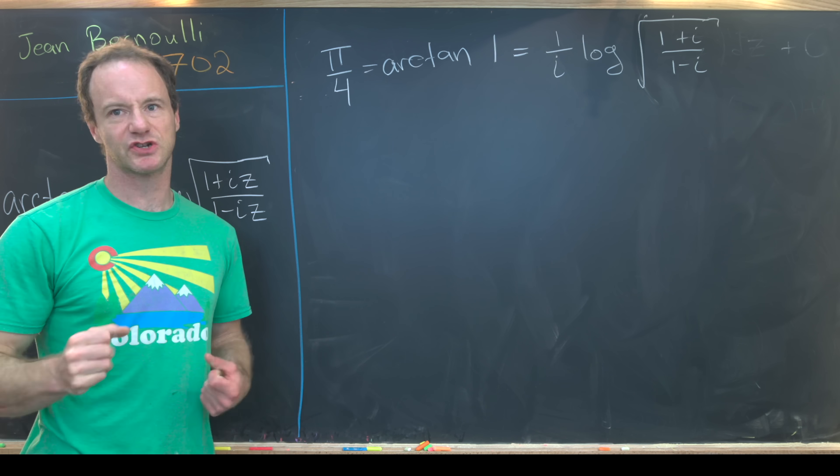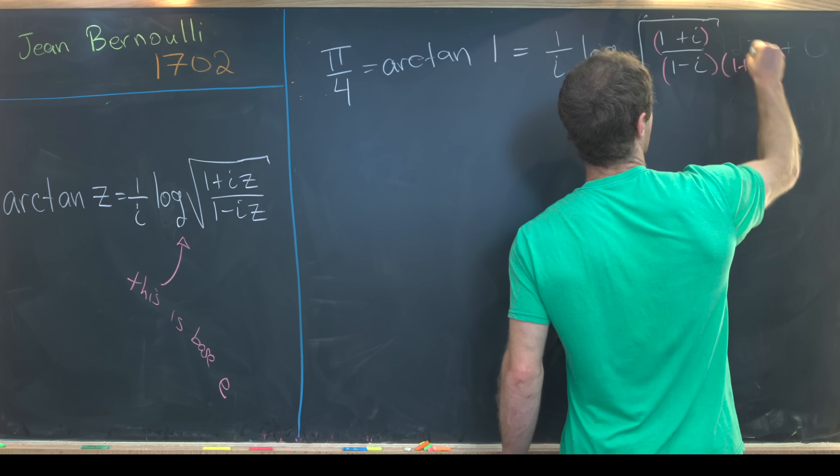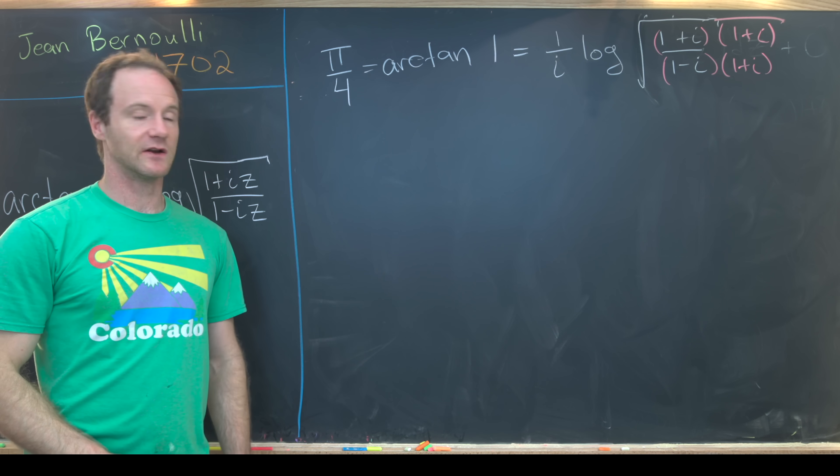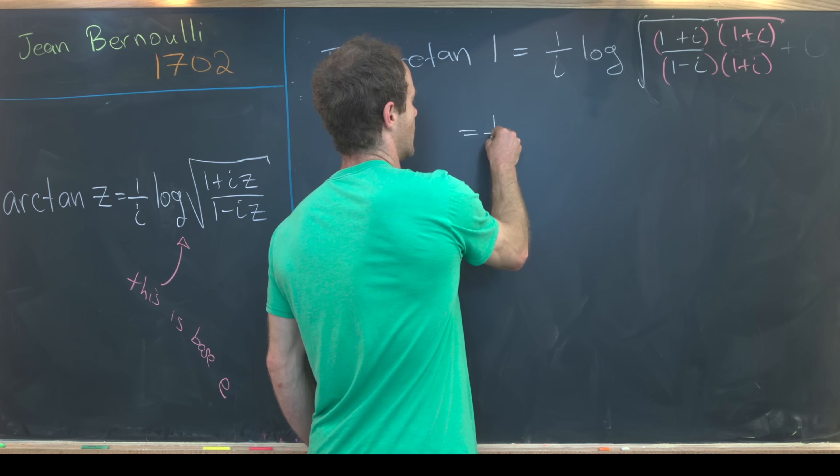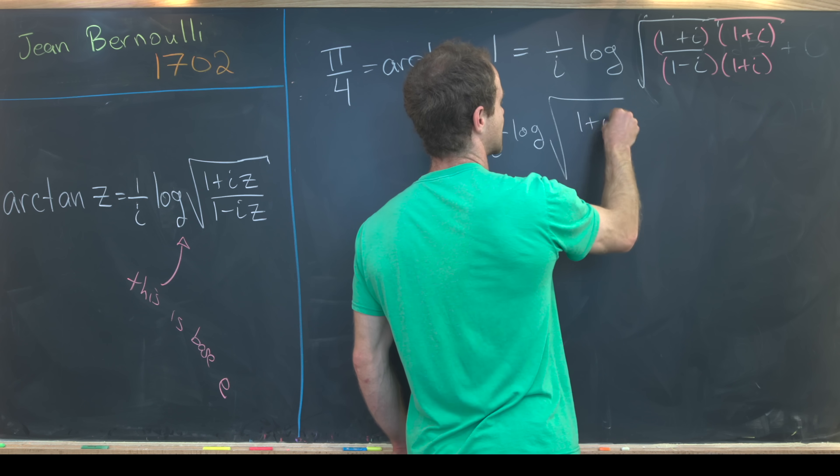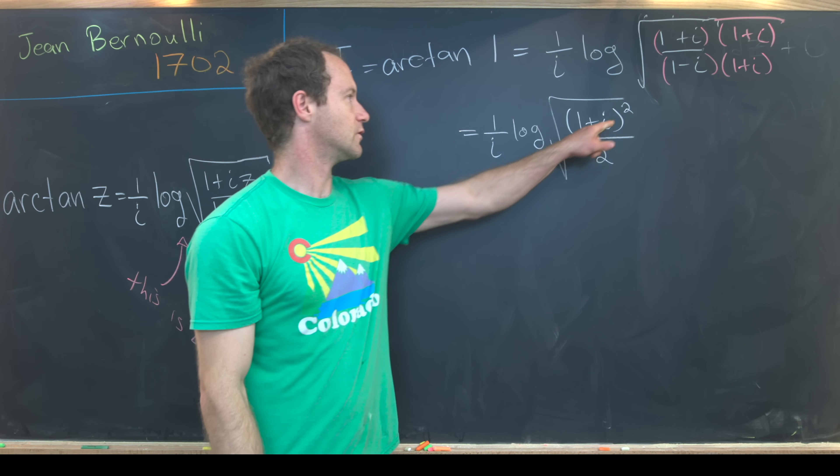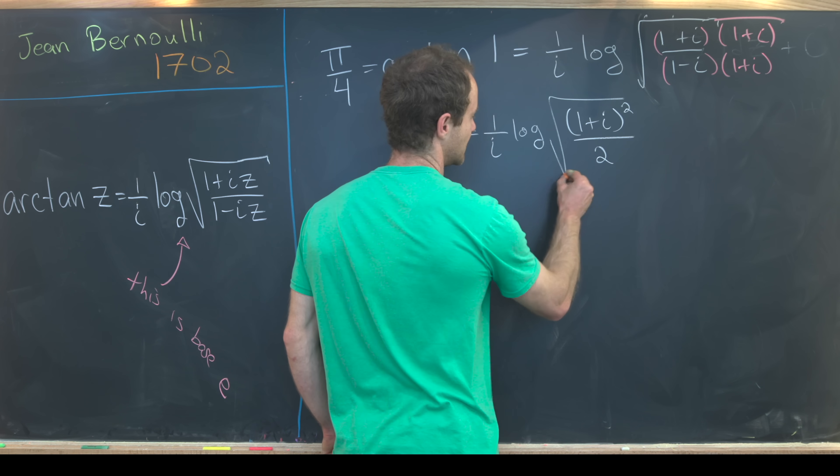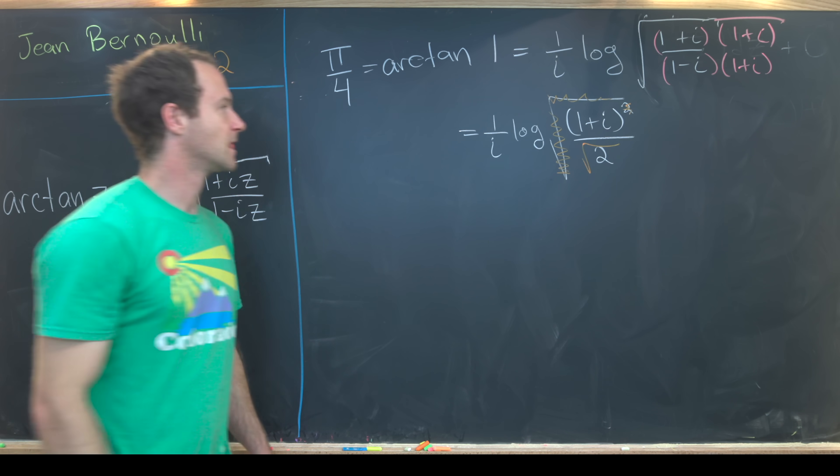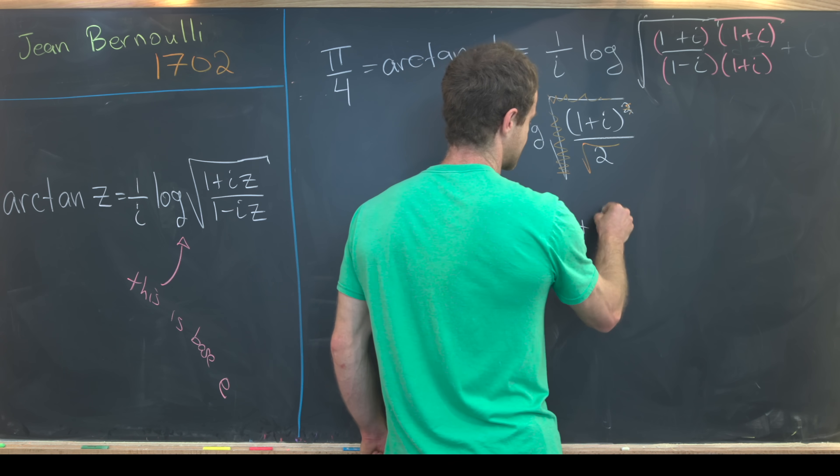Let's simplify that just to make sure this makes sense. I'll multiply the numerator and the denominator by one plus i, and that's all happening in the square root. I'll do that so that I have a real number in the denominator instead of a complex number. That's going to leave me with one over i and then the logarithm of the square root of (one plus i) quantity squared in the numerator and two in the denominator. But notice this square root will kill this square right here. So we can scrub those out if we introduce a square root of two right here. We've got one over i and then the log of one over root two plus i over root two.